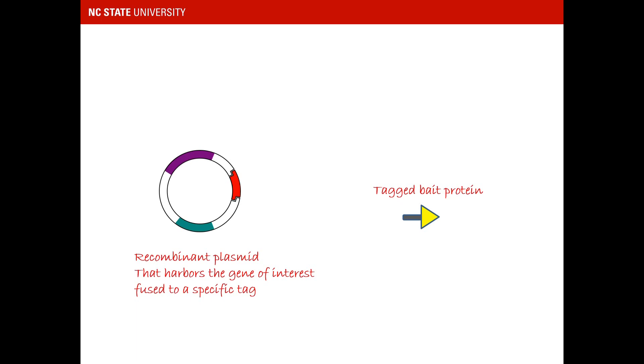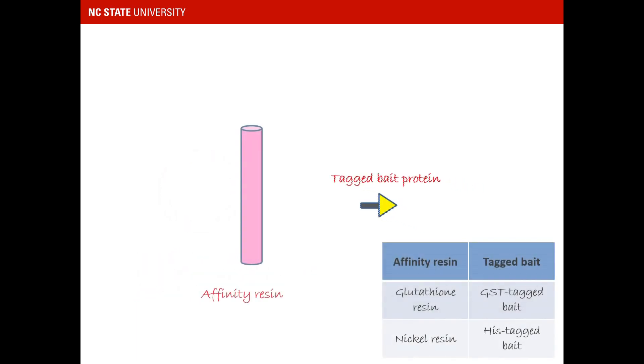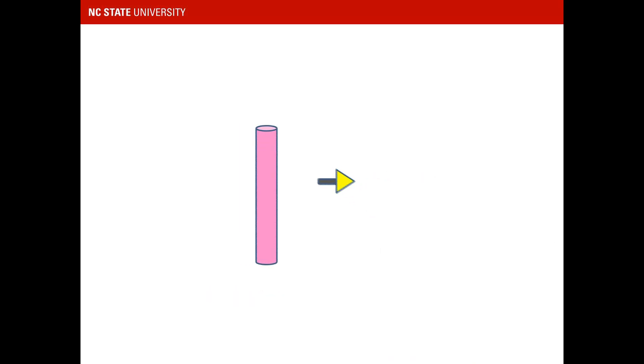Then, a whole cell lysate containing the tagged protein is incubated with an affinity resin. For example, if we use the glutathione S-transferase tagged-bait, the glutathione resin is a ligand. If we use the His-tagged-bait, the nickel resin is a ligand. Thus, we can get the tagged protein immobilized on the affinity resin.